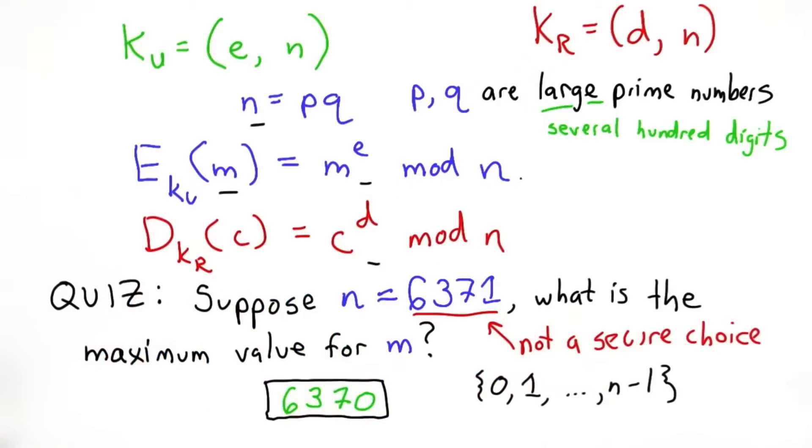But as long as m and n are relatively prime, we should generate all the different values, so we can use each of these as different messages.